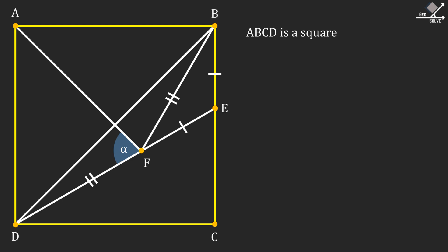ABCD is a square. Line segment DF is equal to line segment FB. Line segment FE is equal to line segment BE. And we are asked the angle DFA, which is shown as alpha.